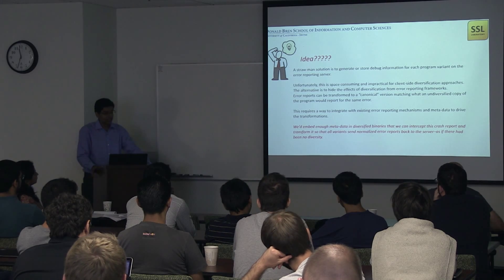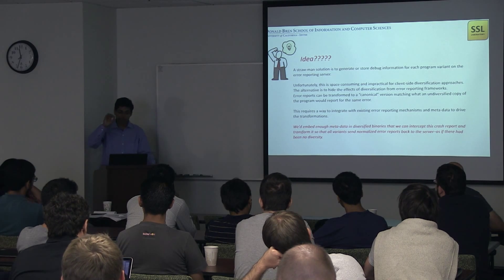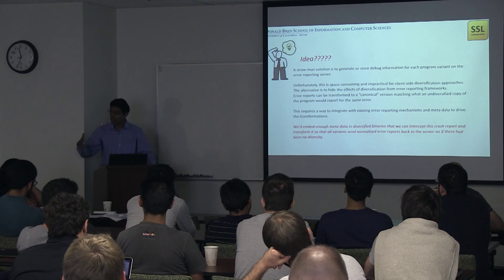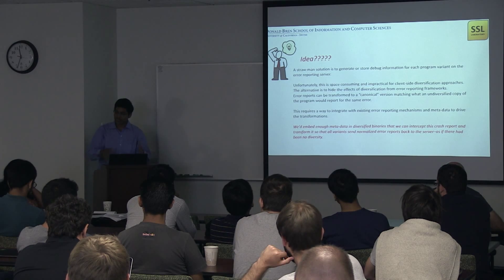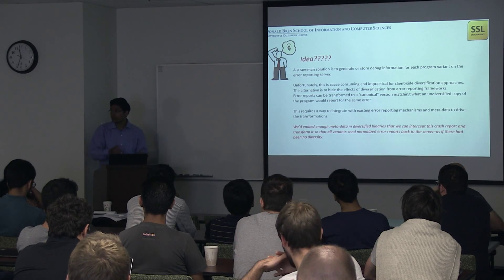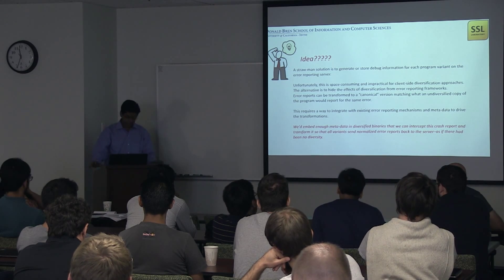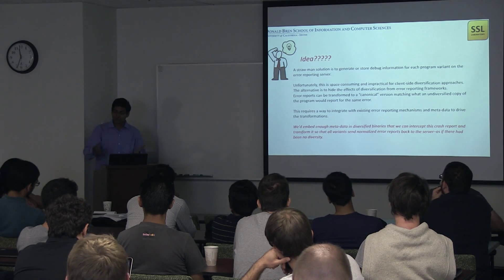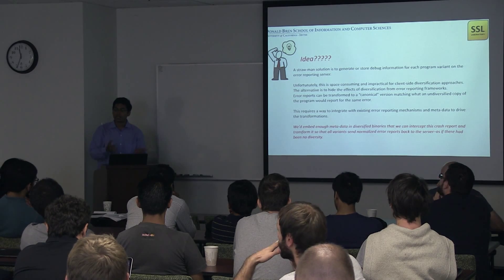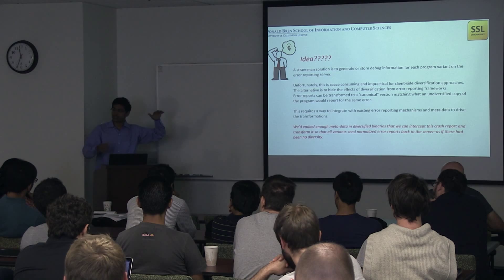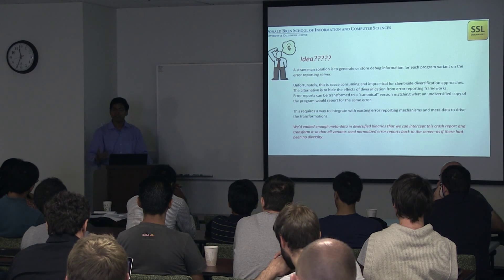What is the idea behind it? A solution could be that if we are diversifying the binaries by simply putting on a random seed, you could say let's put the same random seed and generate the same binary again, and then you can easily debug it. But there are a lot more problems behind it. My idea is to embed enough metadata to generate enough information so that I can find out where exactly my error is in the original source files, as if those error reports came from an undiversified binary.